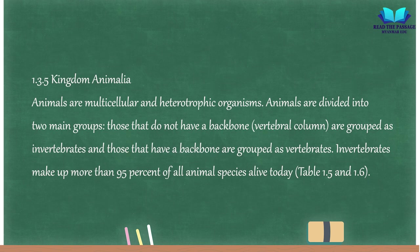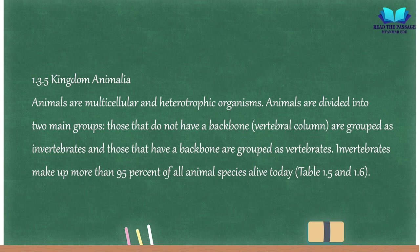1.3.5 Kingdom Animalia. Animals are multicellular and heterotrophic organisms. Animals are divided into two main groups: those that do not have a backbone (vertebral column) are grouped as invertebrates, and those that have a backbone are grouped as vertebrates. Invertebrates make up more than 95% of all animal species alive today.